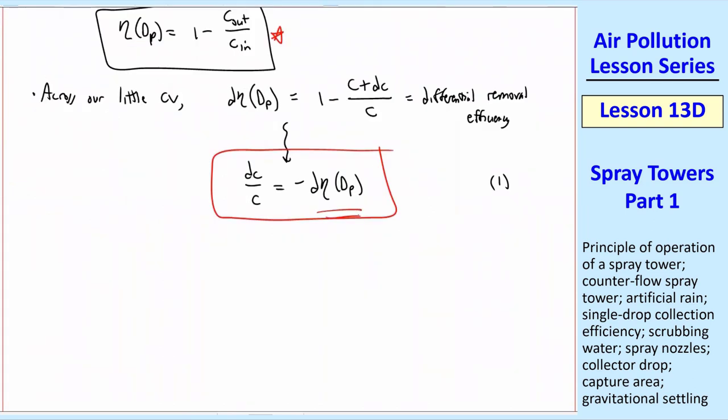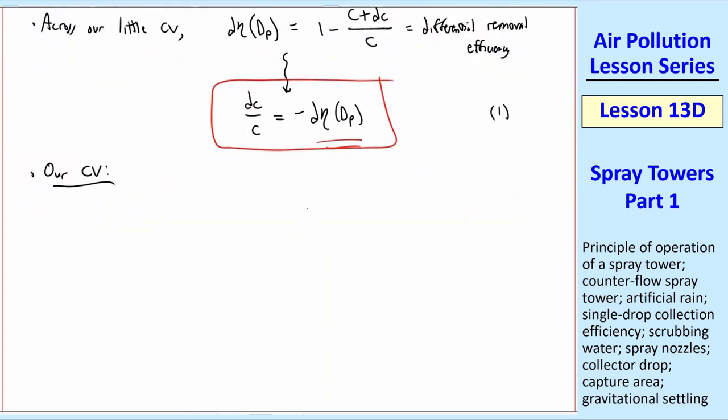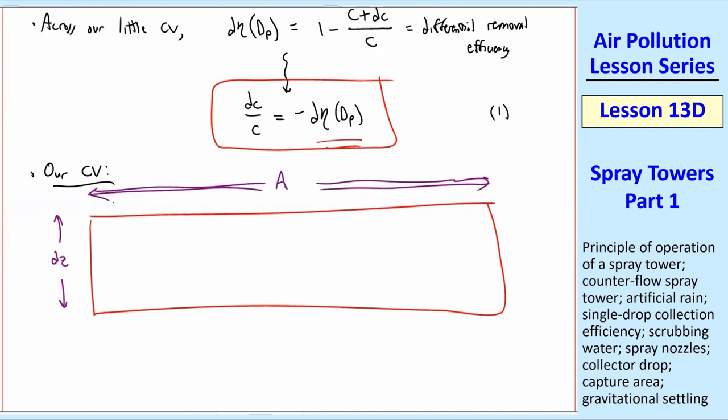Now we have to calculate this d eta DP. Let's blow up our control volume. It's a rectangle of height, DZ, and cross-sectional area, A. That's not just the distance, that's an area. It's this length that you see times the dimension into the page. Or if it's round, it's just a circle of the big round tower area. Well, we have these drops in here. Some of the drops, some of the raindrops happen to be in the control volume, and these raindrops are falling at absolute speed VC.